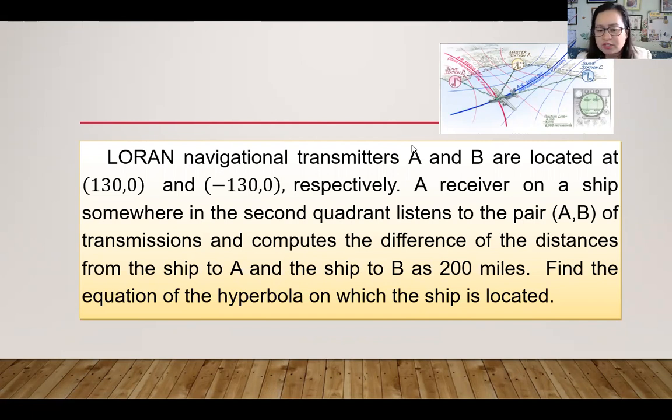So take note of the given. We have two transmitters A and B at coordinates (130,0) and (-130,0) respectively. Then we have a ship which is on the second quadrant and the differences of the distances of the ship from A, from the ship to A and from the ship to B is 200 miles.